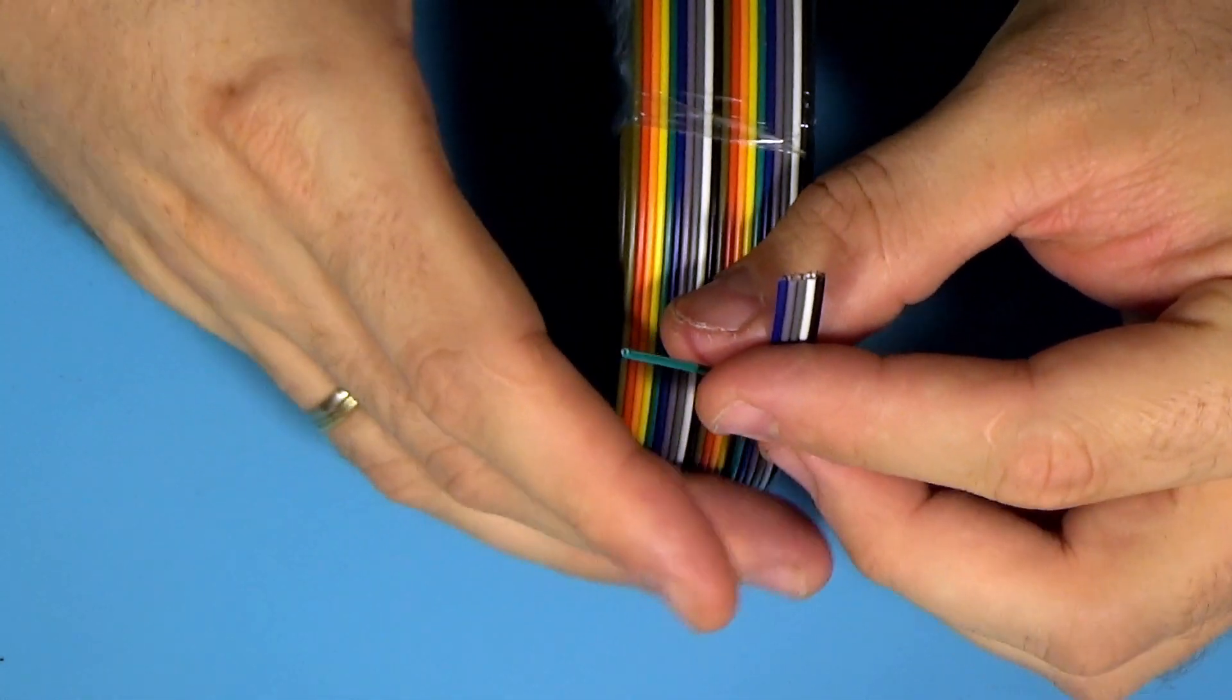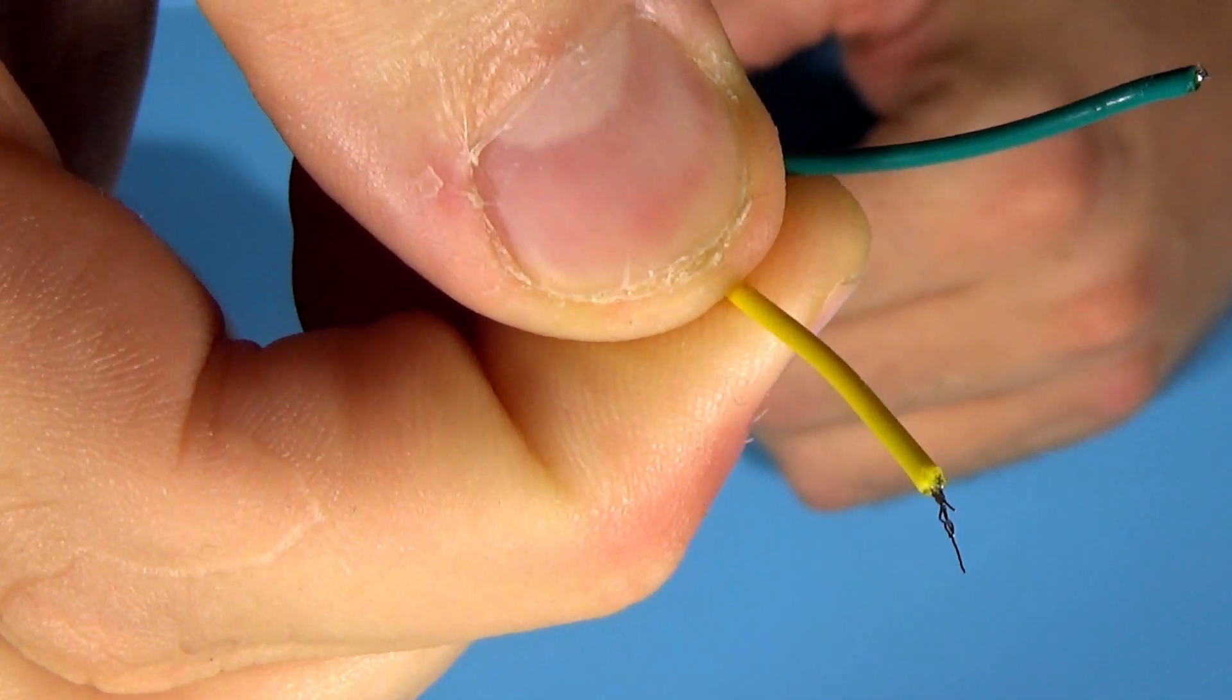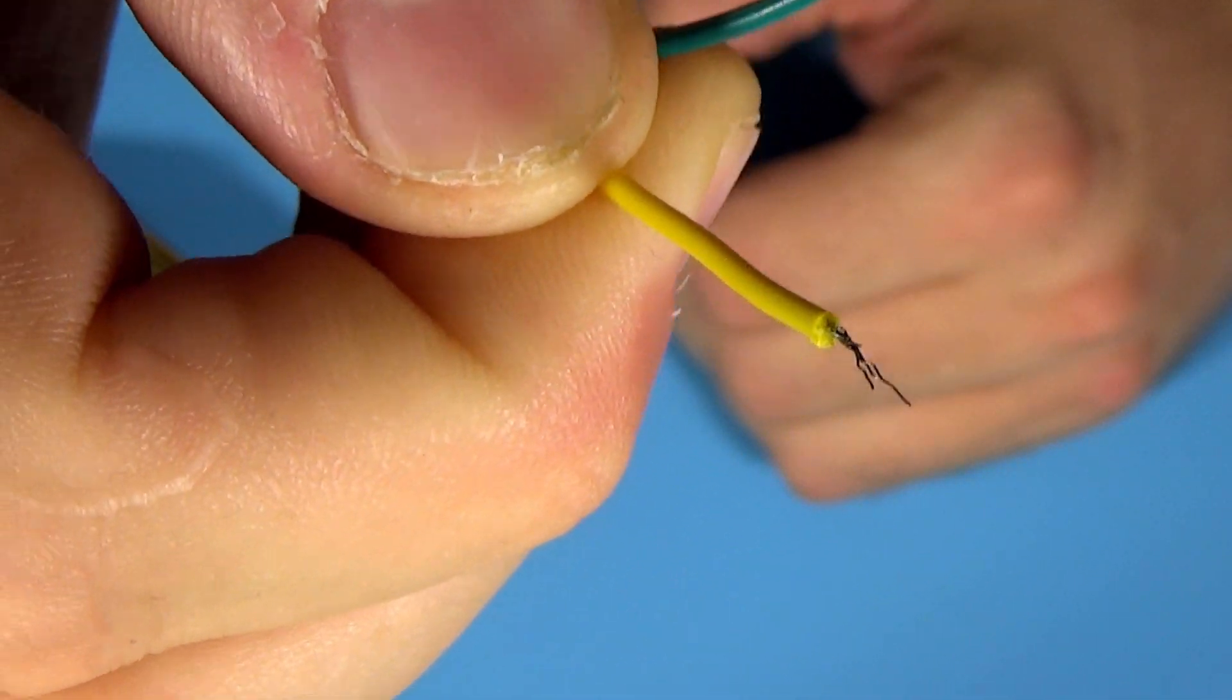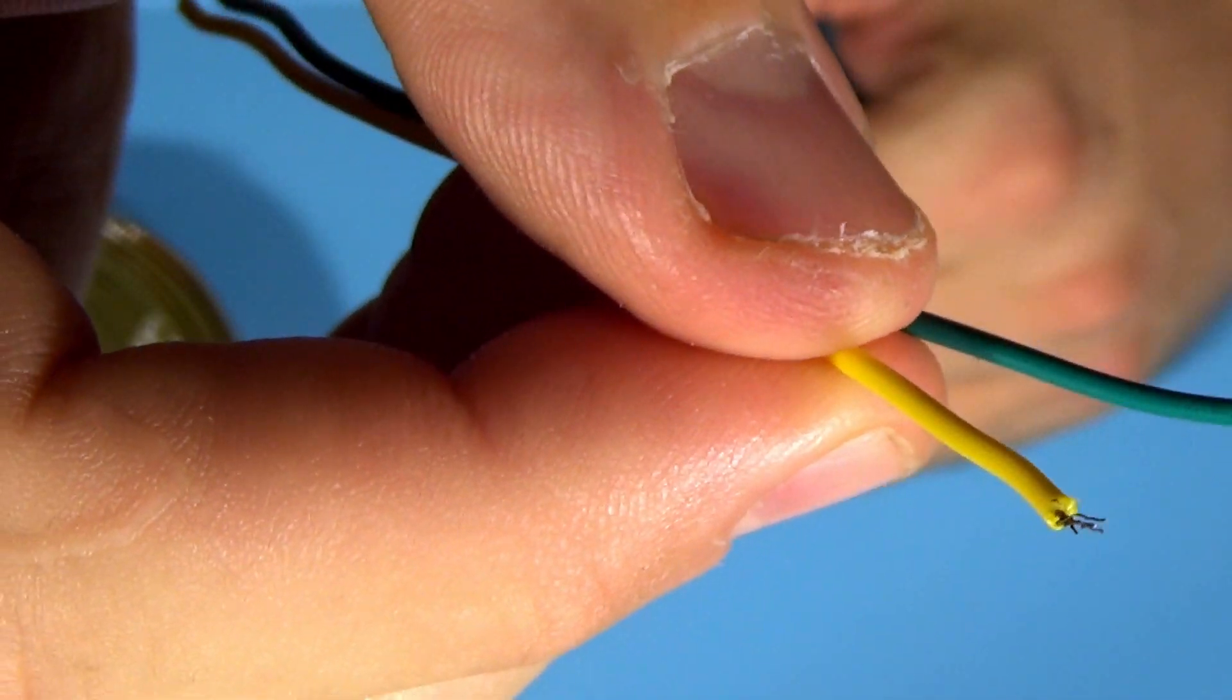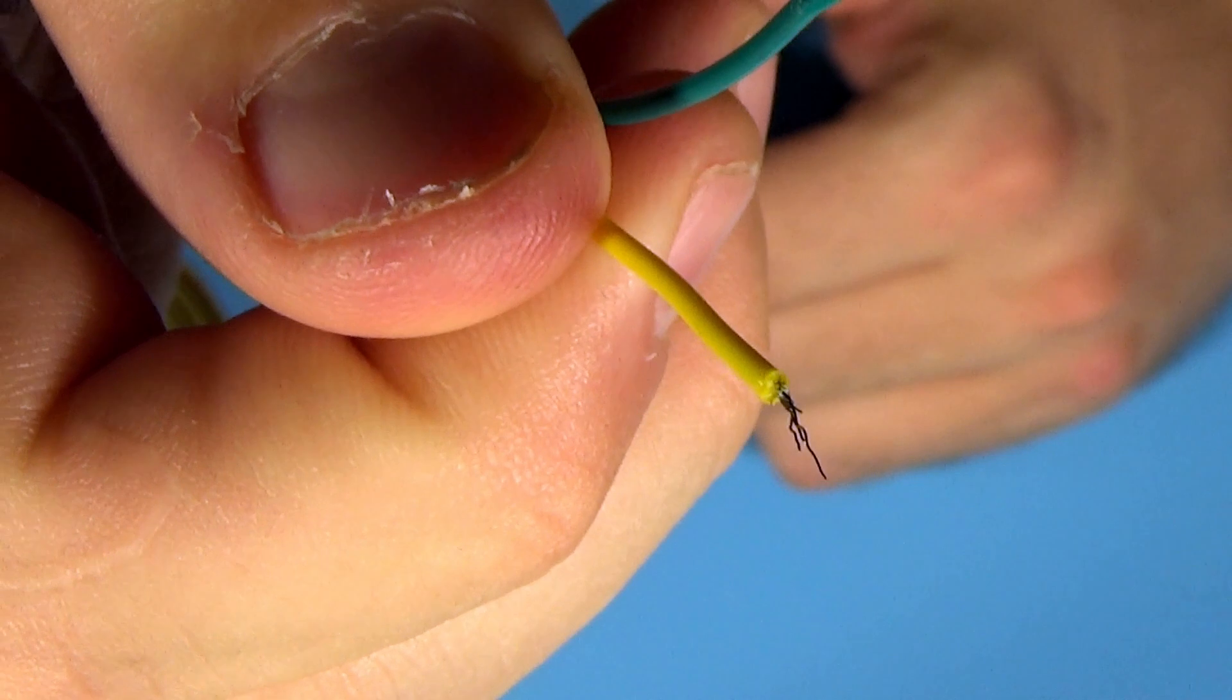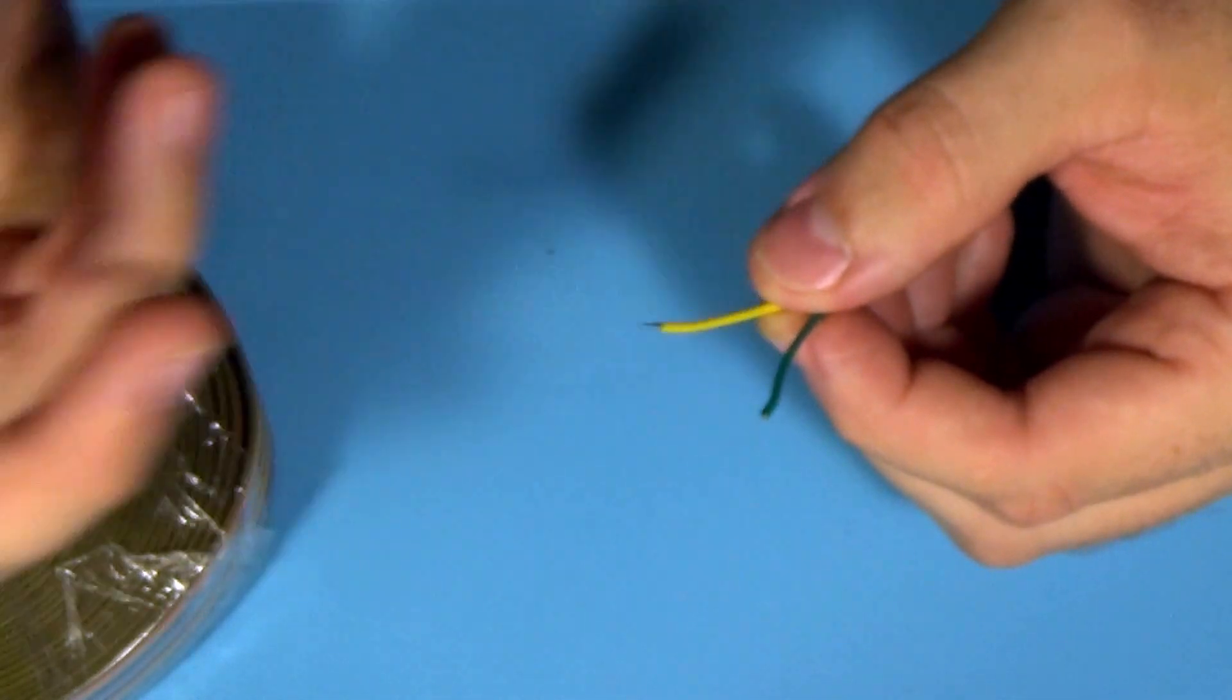Also let's assume that you have managed to strip it and you will end up with something like this. Yeah you can see some pieces already destroyed during the stripping and the whole thing is very very thin.